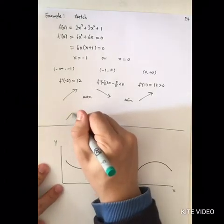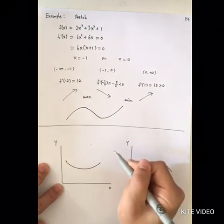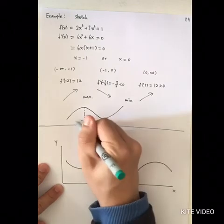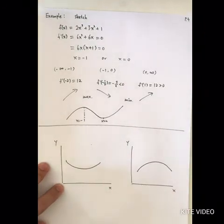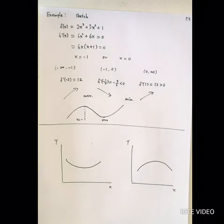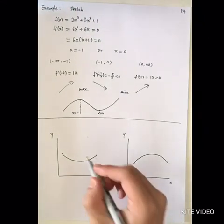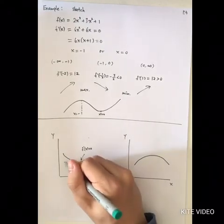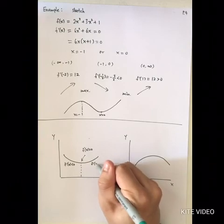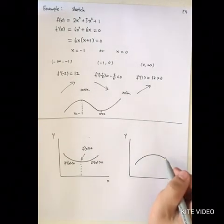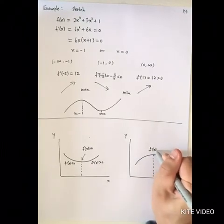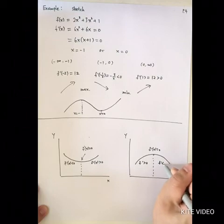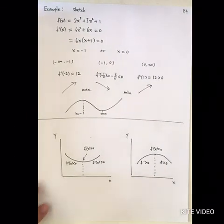So if you want to draw the function, it increases to a maximum at x equal to negative 1, then decreases to a minimum at x equal to 0, then increases again. In conclusion, to find a minimum point, locate a critical point where f prime changes from negative to positive. To find a maximum point, locate a critical point where f prime changes from positive to negative. This is how you find critical points and sketch the graph.